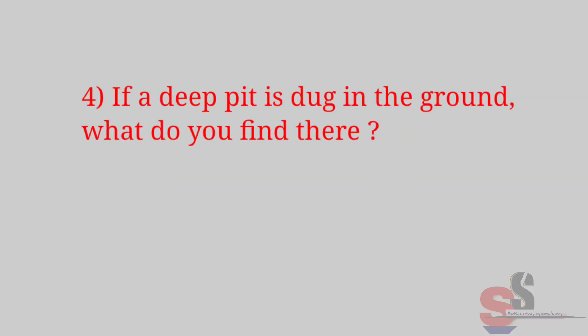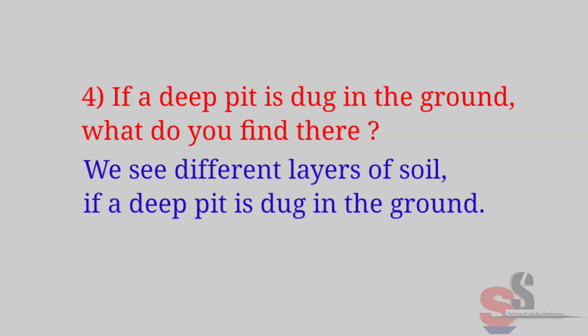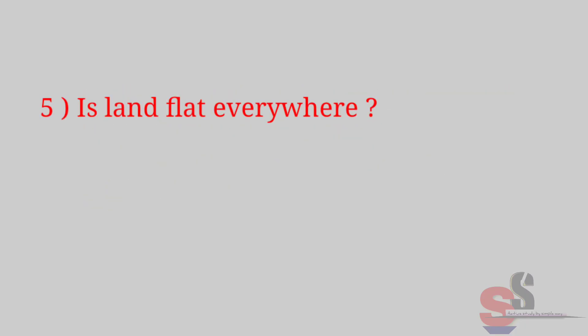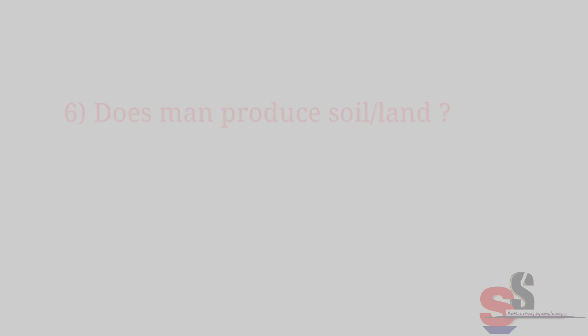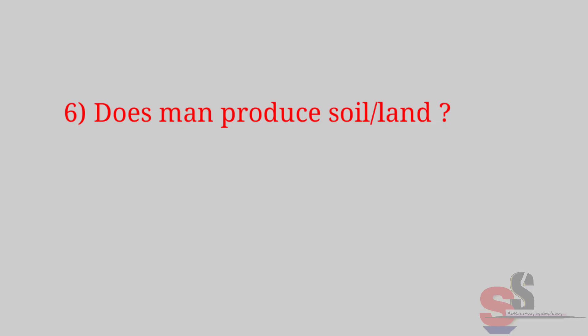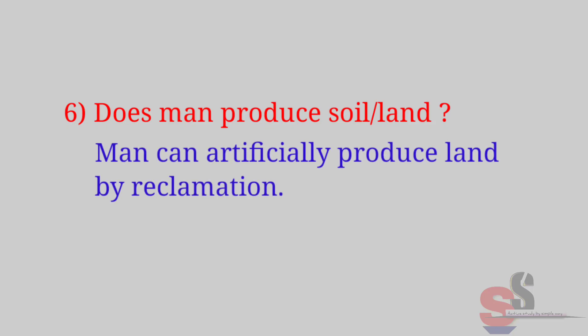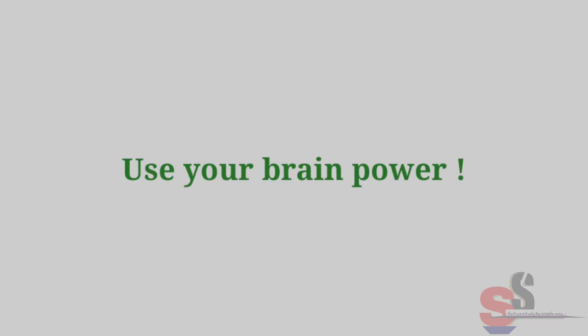4. If a deep pit is dug in the ground, what do you find there? Answer: We see different layers of soil. 5. Is land flat everywhere? Answer: No, land is uneven. At some places there are mountains and hills while at some places there are valleys. 6. Does man produce soil or land? Answer: Man can artificially produce land by reclamation.